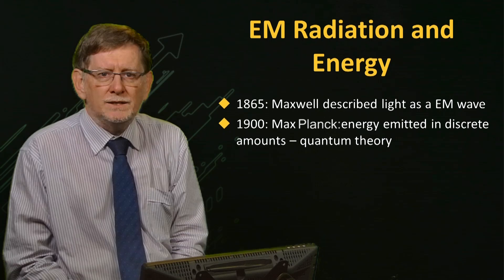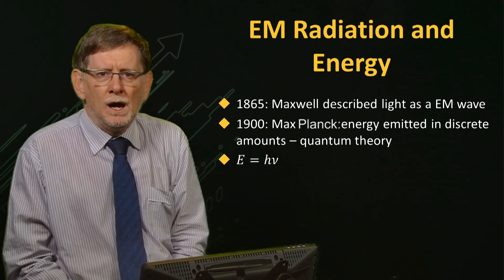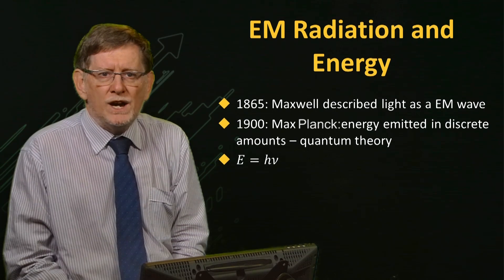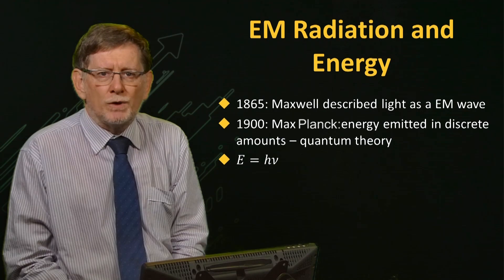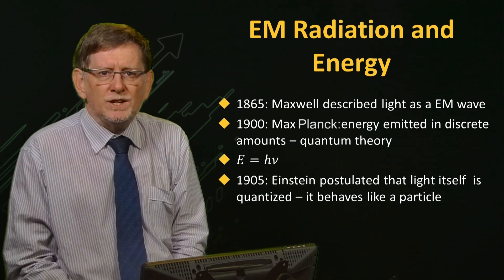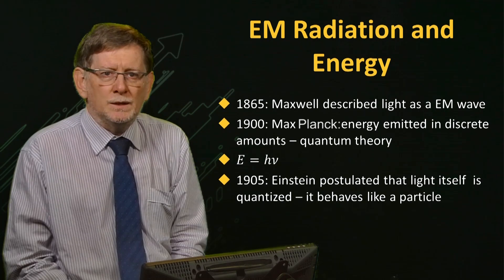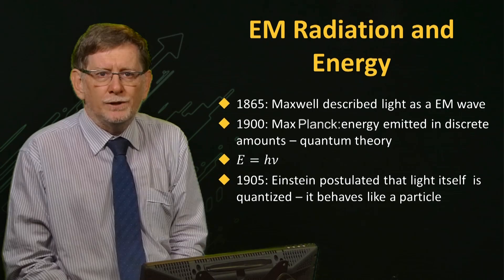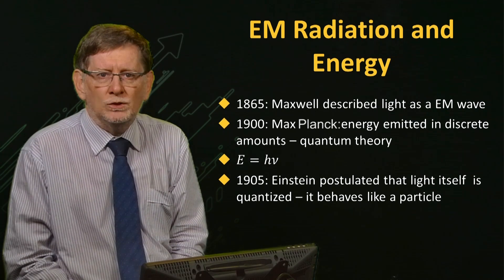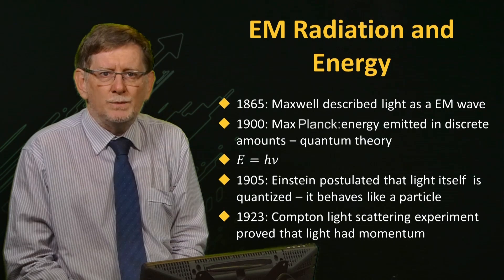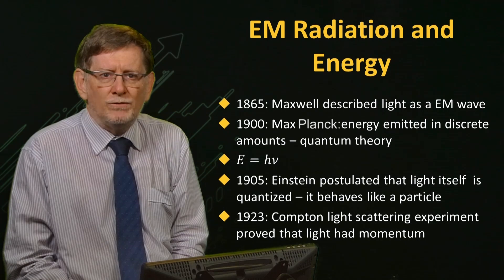Importantly, Planck also recognised that the energy was related to the frequency of the light. Planck's equation defines that relationship, whereby the energy is directly proportional to the frequency, and the proportionality constant H is now called Planck's constant. In 1905, Einstein went a step further by stating that light has mass and momentum, and demonstrated it through the photoelectric effect, whereby light could displace an electron and cause a current to flow. He postulated that light consisted of particles, just like electrons. Then in 1923, Compton showed that light could be scattered by an electron, demonstrating that light indeed travelled as a particle.